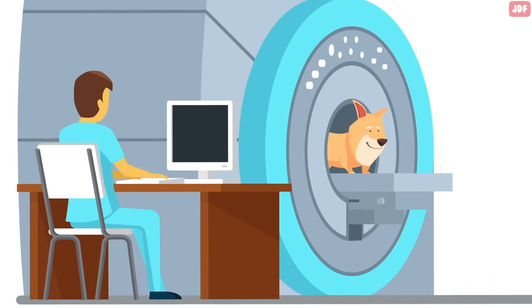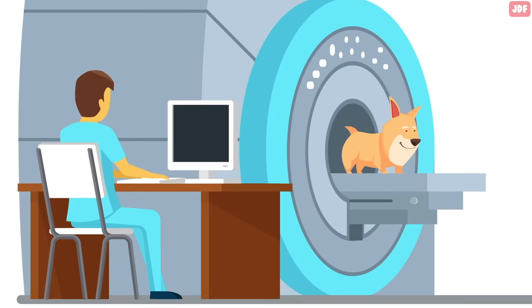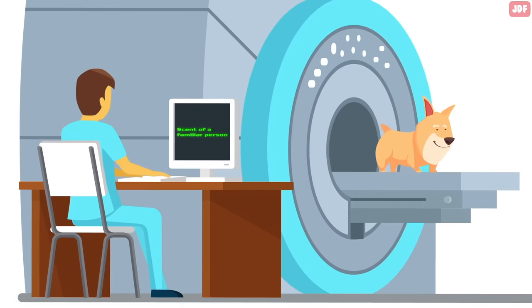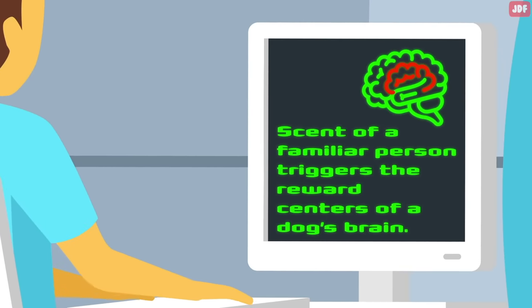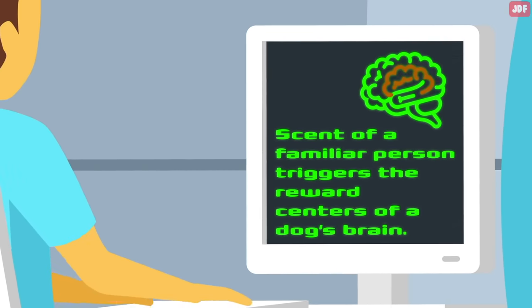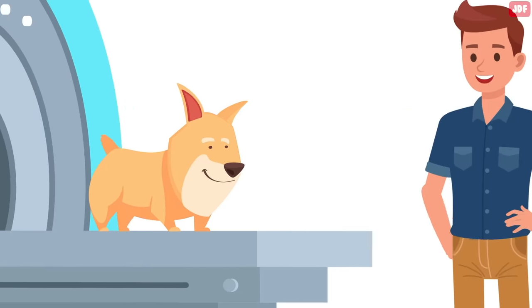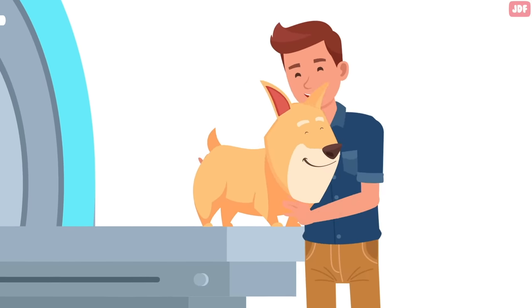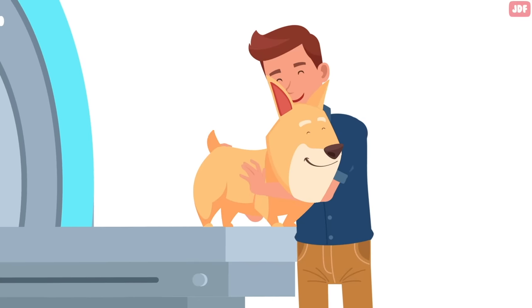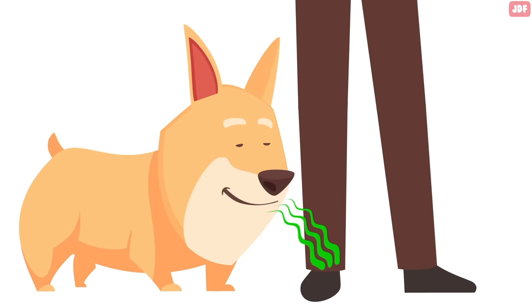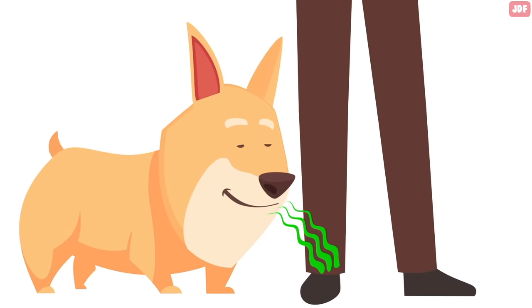When canine behavioral researchers studied the brain scans of dogs exposed to certain smells, they found that the scent of a familiar person triggered the reward centers of a dog's brain in a way that no other scent accomplished. This suggests that not only can dogs discern their familiar humans, but that dogs genuinely love spending time with their owners. Scientists believe that dogs experience something akin to pleasure when they smell their owners.